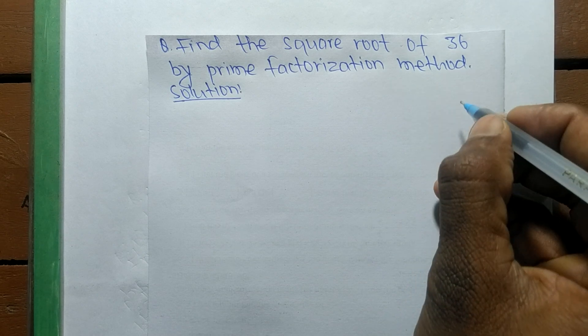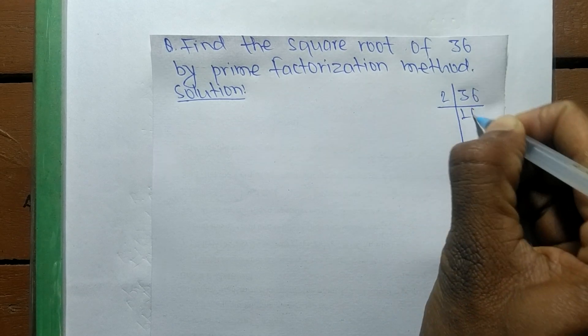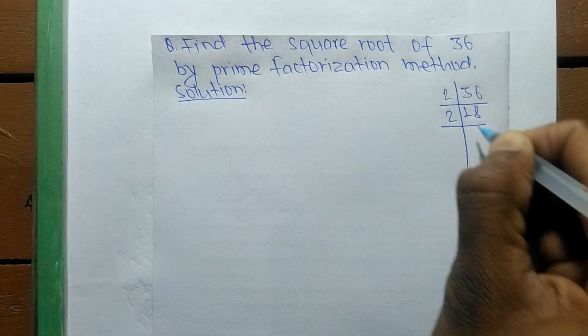First, we find out the prime factors of 36. So it is 2 times 18, which means 36 equals 2 times 18.